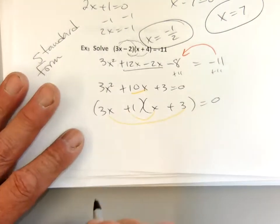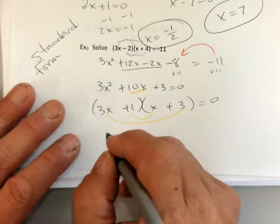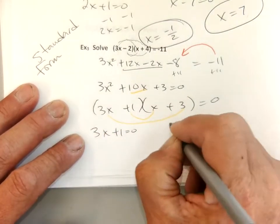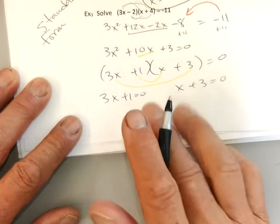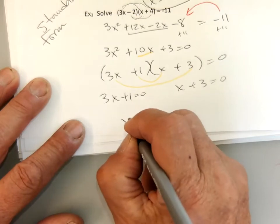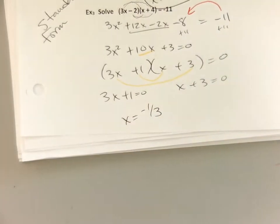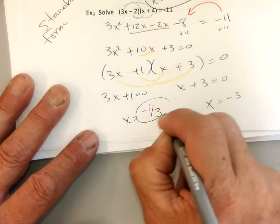So we'll have 3x plus 1 equals 0, x plus 3 equals 0. So minus 1, minus 1, divide by 3. You OK with that? We're in pre-calc, right? I subtracted 1, divided by 3. And then x equals negative 3. Two answers.